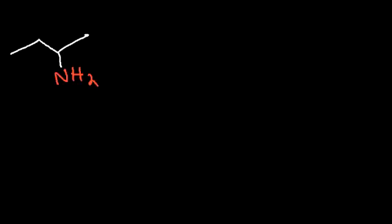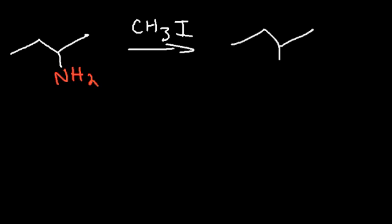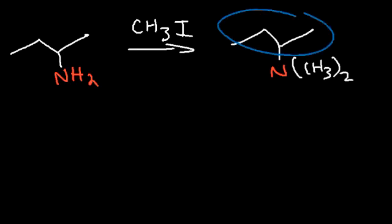Now, what about the Cope elimination? It turns out the Cope elimination also gives you the Hofmann product. Starting with this particular amine, we again add methyl iodide — but we don't want to add too much. We don't want a quaternary ammonium ion where nitrogen is bonded to four carbons. We want a tertiary amine, with nitrogen attached to only two methyl groups plus the parent chain. In our next step, we're going to add hydrogen peroxide.